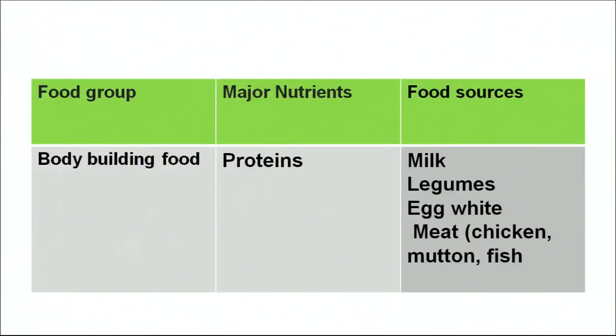Another category in the food group is body-building foods, whose major nutrients are proteins. We can get protein from milk, legumes, egg white, meat, chicken, and fish.